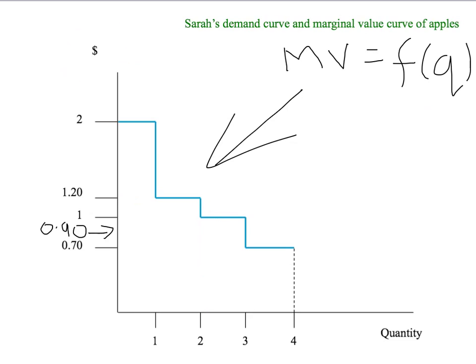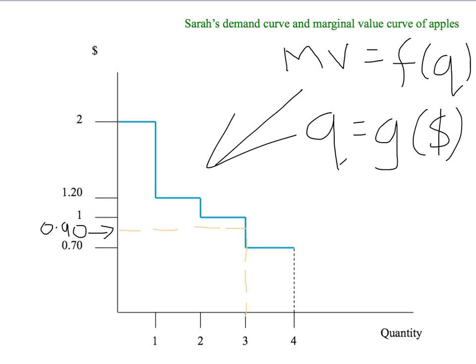Last time, we noted that we could read the marginal value curve the other way. In other words, given a particular price, such as 90 cents, if we go across to the marginal value curve from that price and then go down to the quantity axis, that tells us the number of apples that Sarah would like to buy when the price of apples is 90 cents per apple. But that's just our definition of a demand curve. So Sarah's marginal value curve is Sarah's demand curve — if we go from quantity to dollars we have her marginal value curve; if we read the curve the other way, from dollars to quantity, we've got her demand curve.